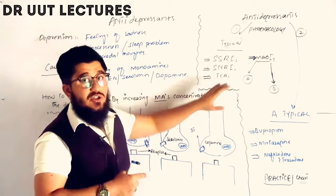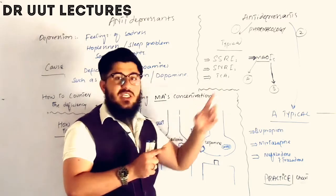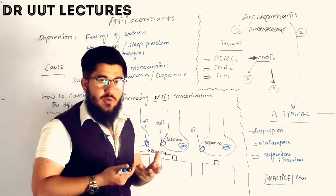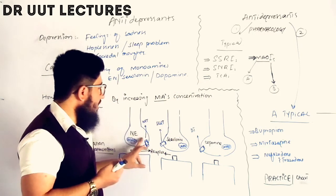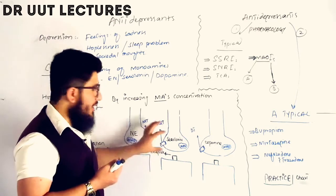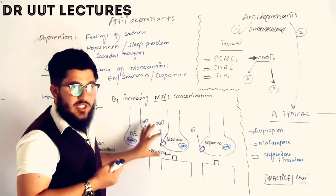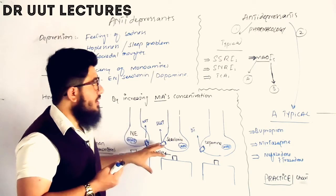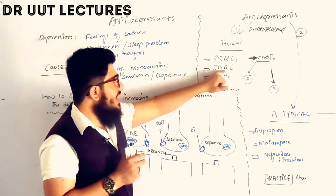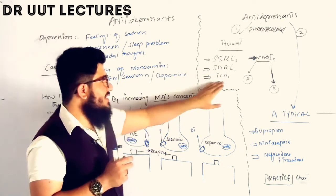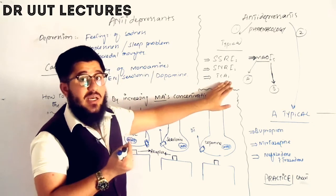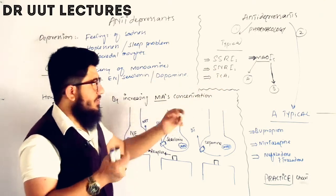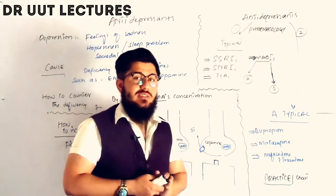The next class is TCAs — Tricyclic Antidepressants. They are named for their structure, which contains three cyclic rings. TCAs also block the norepinephrine and serotonin transporters, increasing monoamine concentration in the synapse. A common question is: if SNRIs do the same job, why use TCAs? The answer is that some patients do not respond to SNRIs, and in those cases TCAs are used.